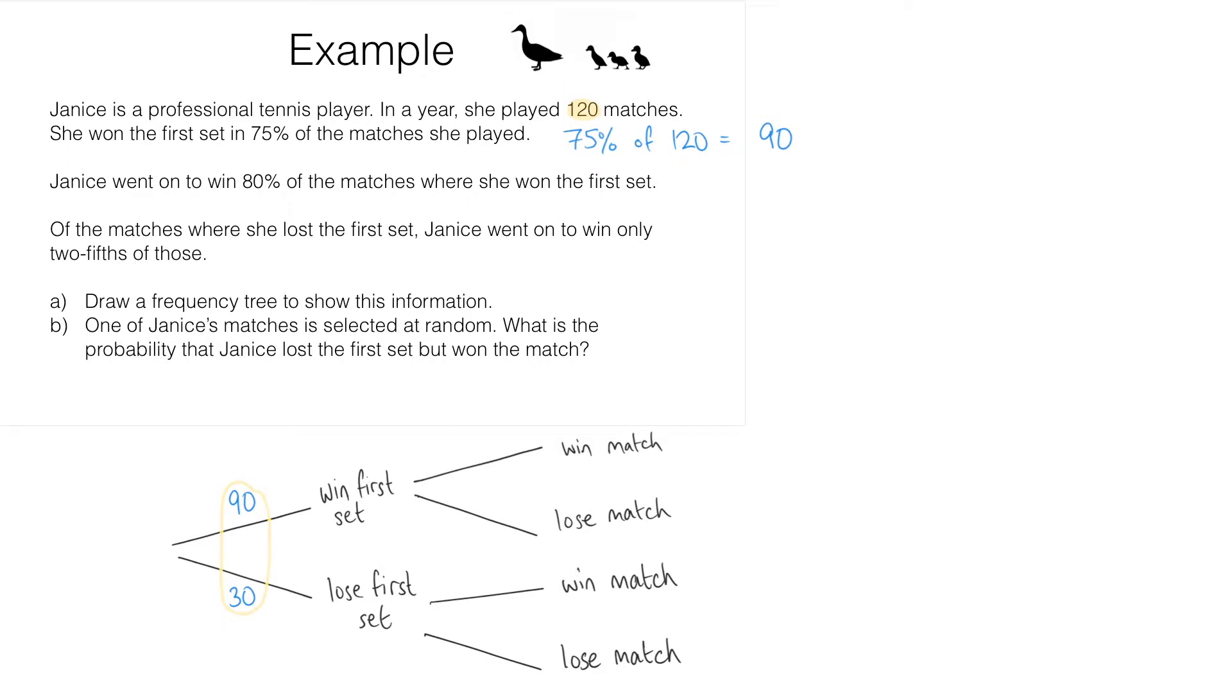Moving on to the next bit of information, we find that Janice went on to win 80% of the matches where she won the first set. So she won the first set in 90 matches and then in 80% of these 90 matches she's going to win the match overall. That means we need to work out 80% of 90. 10% of 90 is 9, so 80% of 90 is going to be 8 lots of that. 8 lots of 9 is 72. So 80% of 90 is 72.